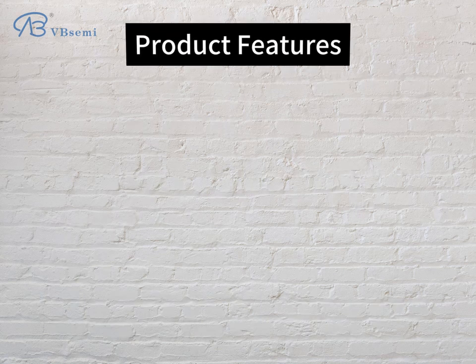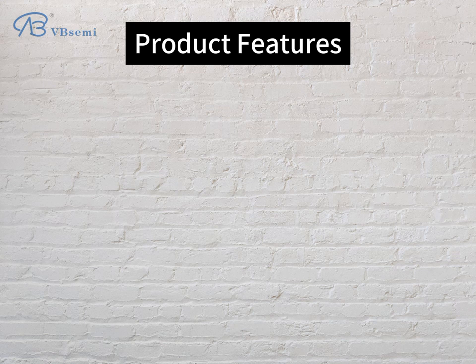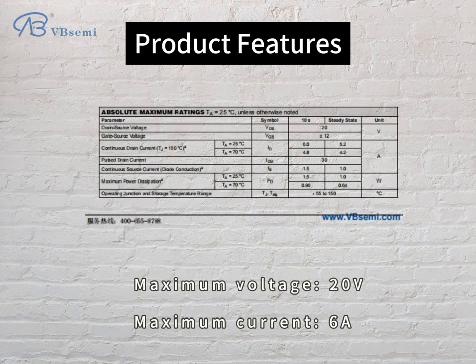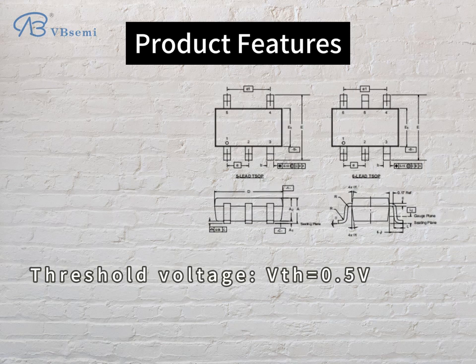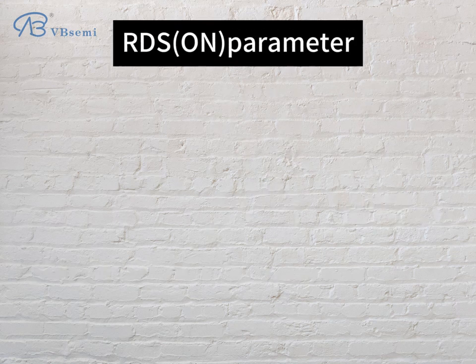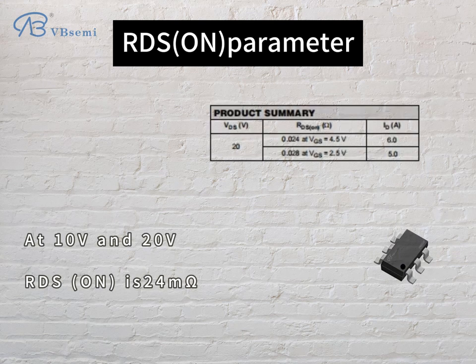Product features: Maximum Voltage 20V, Maximum Current 6A, Threshold Voltage VTH = 0.5V. RDS on parameter: at 10V and 20V, RDS on is 24 milliohms.